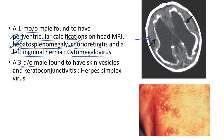Case: 3-day-old male found to have skin vesicles and keratoconjunctivitis — congenital herpes simplex virus infection. In congenital herpes simplex infection there will be skin vesicles and keratoconjunctivitis.